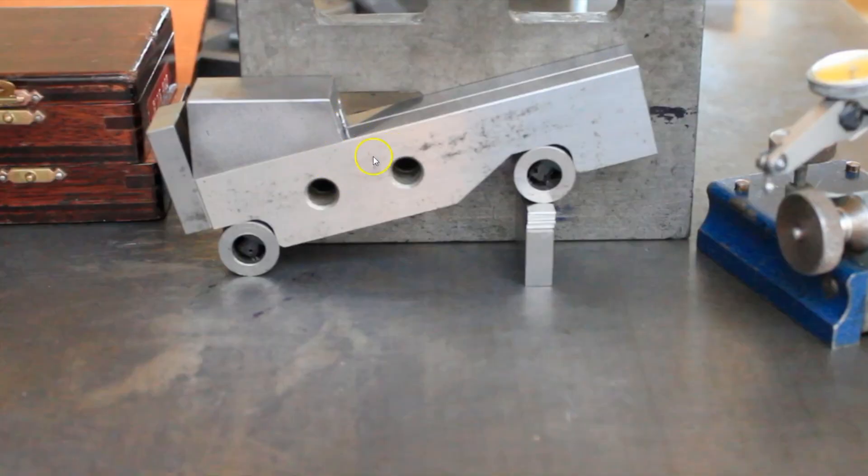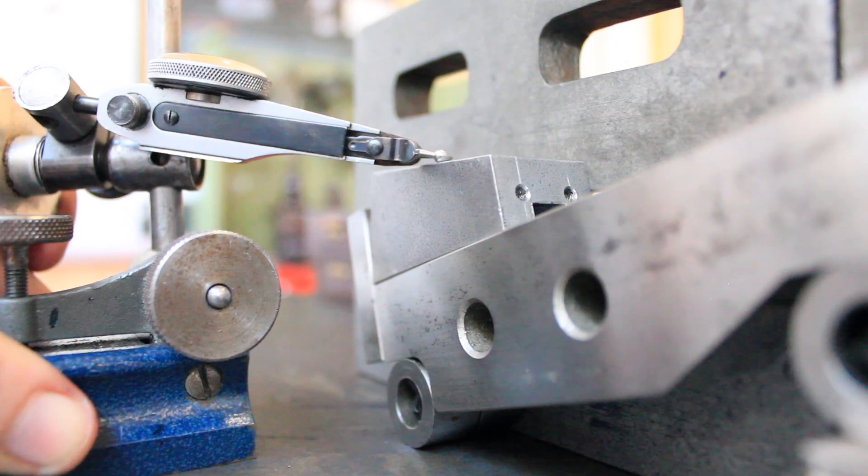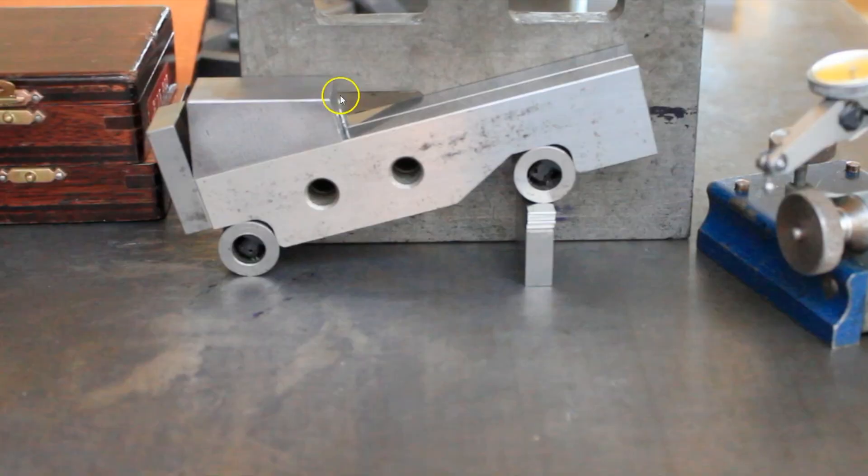This is an image of what we're trying to achieve: we're inclining the sine bar at an angle of 15 degrees so that when we run the finger type DTI across the top of the surface, we can check for any movement. This should be flat.